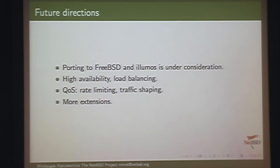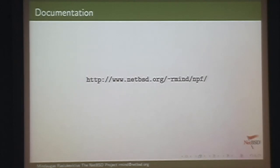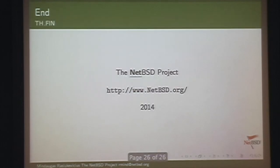Future directions: 802.1Q in VLAN support is under consideration and there is some interest from other developers. I plan to add high availability and load balancing. Rate limiting and traffic shaping may integrate with LQ, which is currently kernel-locked in NetBSD, or we might implement something more efficient and easier to configure. Obviously, more extensions. Please check the documentation — there's a page about NPF covering configuration and what's been in these slides. If you have questions or comments about the documentation or in general, just email me.